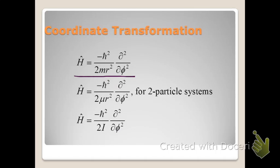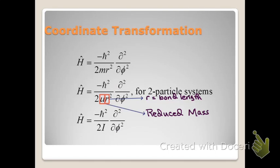If we're talking about two-particle systems such as that for a diatomic molecule, there's a simple transformation that changes the mass m for a single particle into mu, the reduced mass for two particles. We'll also note that r for a diatomic molecule represents the actual bond length. This can be simplified to the moment of inertia, where I equals mu times the bond length squared.